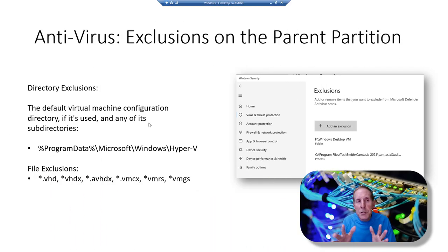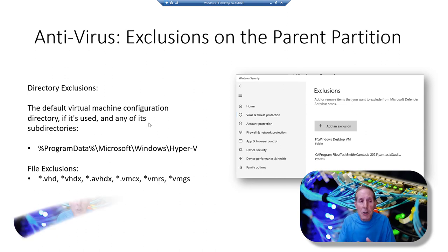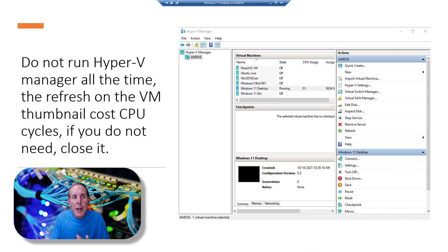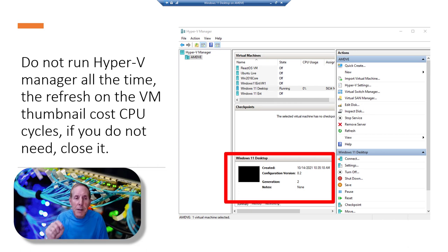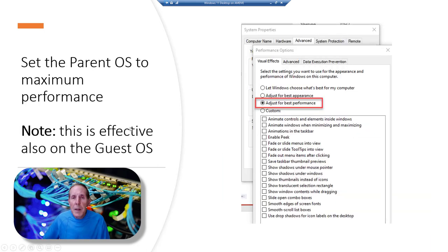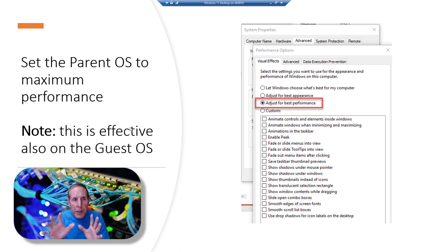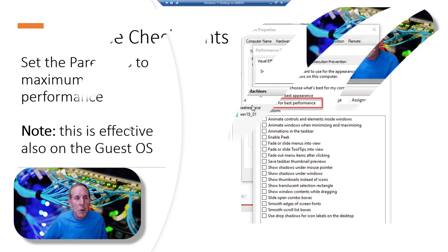Make sure you go to Windows Defender and exclude the various processes, folders, and file extensions. Remember, the directories you want to exclude are where your virtual machine disks and configuration files are located. In your parent partition, don't run Hyper-V Manager all the time — the refresh that happens on your VM thumbnail costs you CPU cycles. If you don't need it, close it. In Windows 11 or Windows 10, go to System Properties, go to Visual Effects, and turn your parent and root partition to best performance.